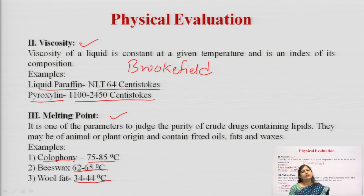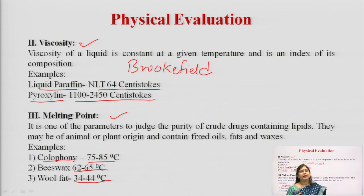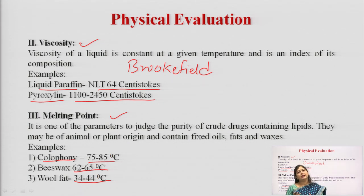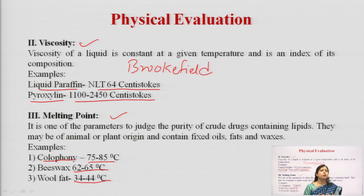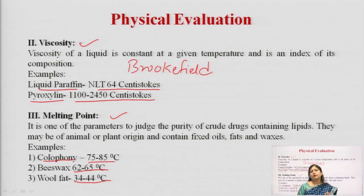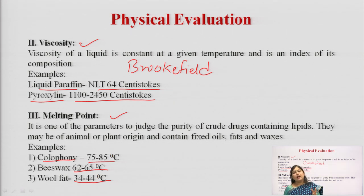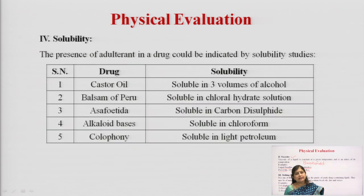Wool fat has a melting point range of 34 to 44°C. Wool fat is a substance obtained when wool is purified — the sebaceous secretions of the sheep are produced and it has very good humectant properties. It is one of the best bases for ointments, used in making ointments and lotions, and it is of animal source.